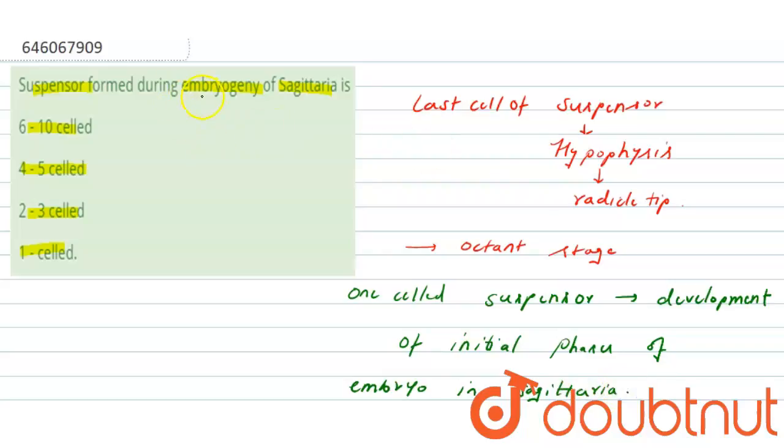So here the question says that suspensor form during embryogenic obsidemia is, that means during the initial stages of embryo. So here, correct answer will be 1 celled, it is 1 celled suspensor. So that is why option D will be the correct one, while the rest of the options are incorrect for this question.